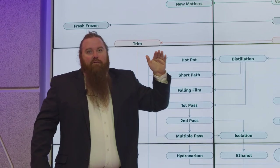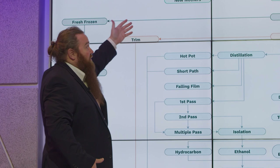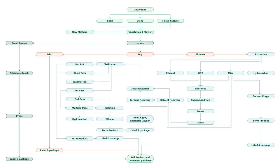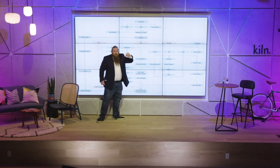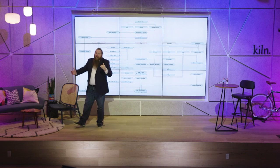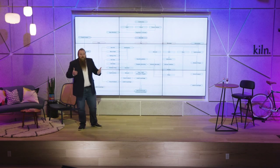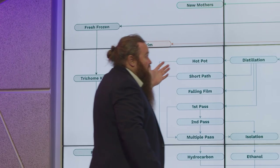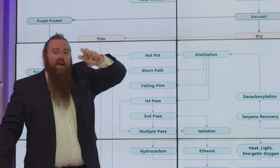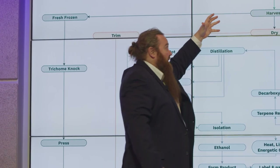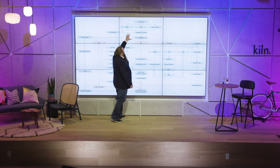We'll start by talking about growing flower and the various things necessary to produce product. We start with new mothers. From new mothers you have several different places you can go — it goes into a vegetative state. Vegetation is determined by how many hours of light versus dark that you have, and then you can take it from a vegetative state into a flowering state by changing that profile.